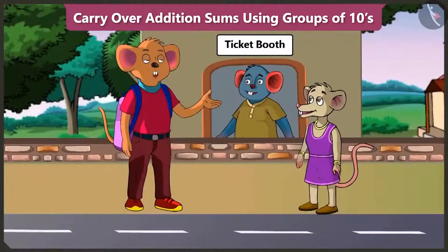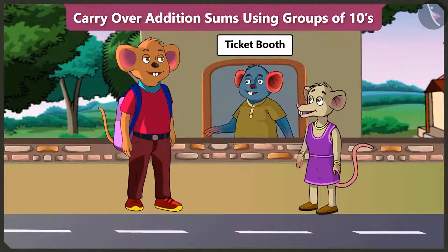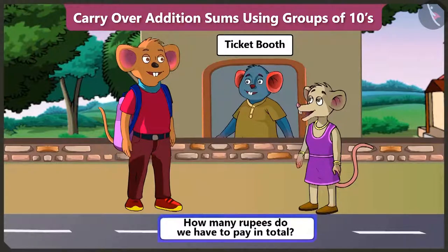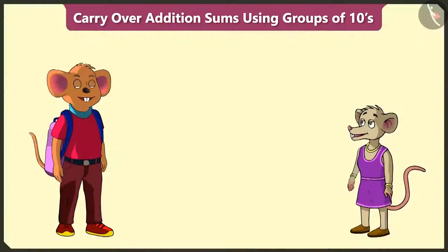Please give us two tickets to the zoo. You are older, so your ticket will be 48 rupees and for this child, the ticket will be for 24 rupees. So, Choo-choo, how many rupees do we have to pay in total? For this, we have to add 24 to 48. How do we do that?